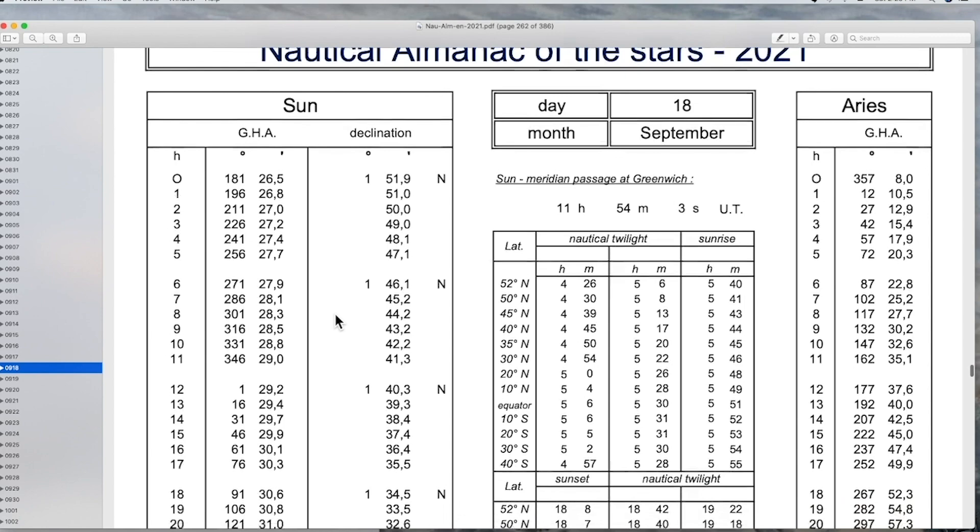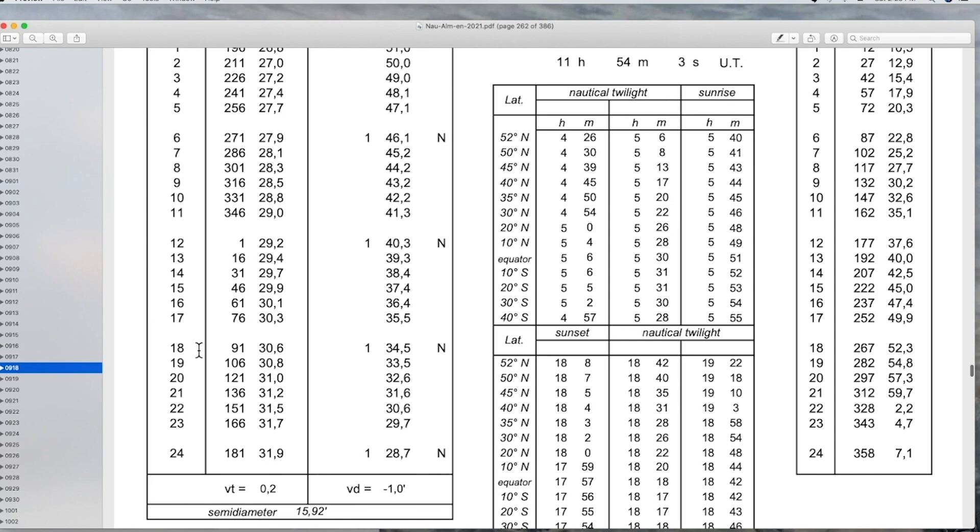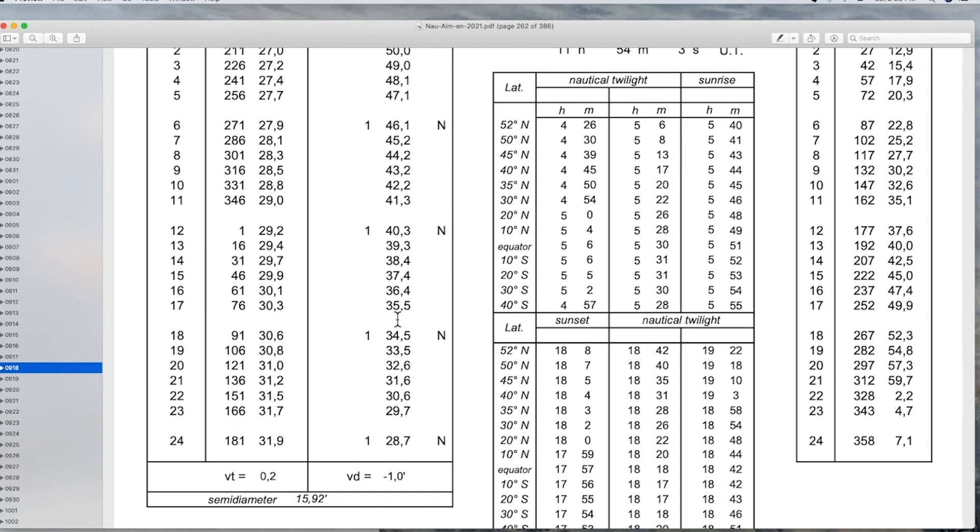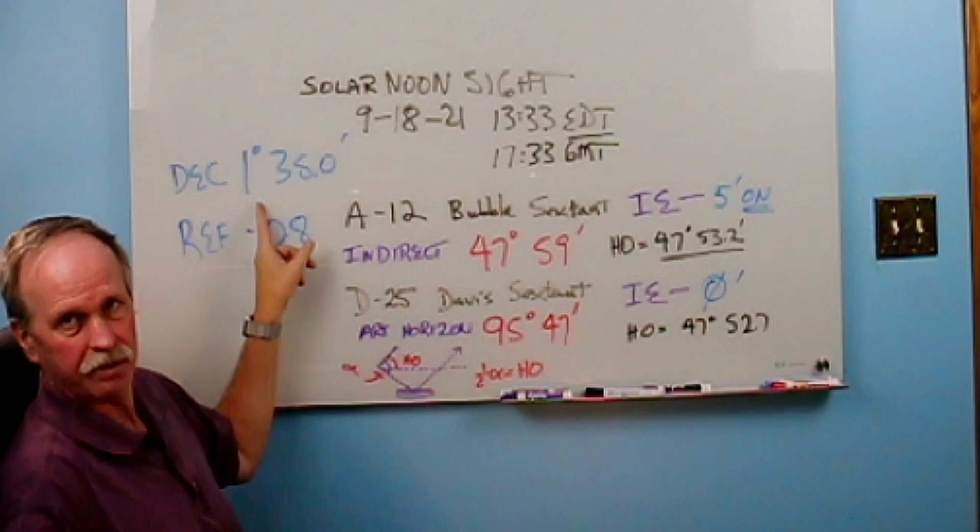And we're going to go over to the sun column. Now my time was between 1700 and 1800 Greenwich Mean Time. The declination of the sun at that time was between 1 degree 35 and a half minutes north and 1 degree 34 and a half minutes north. Now as our time was approximately halfway between this, I'm going to read this as 1 degree 35 minutes even. And as you see, I've recorded the declination here. That's 1 degree 35.0 minutes north latitude.